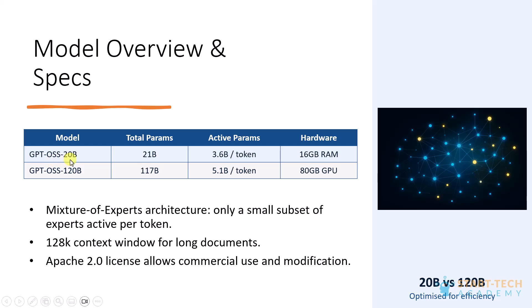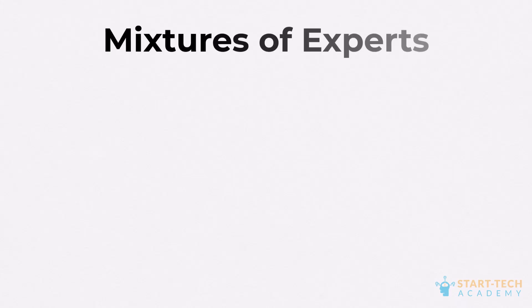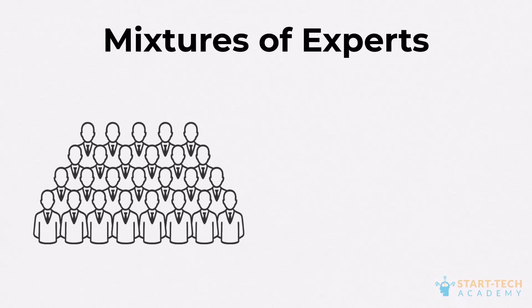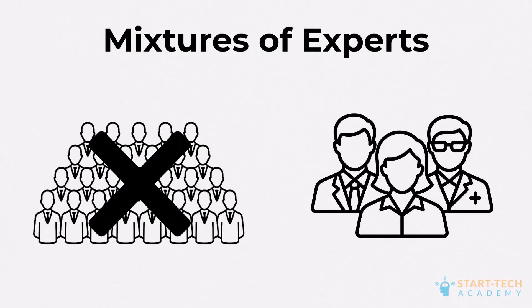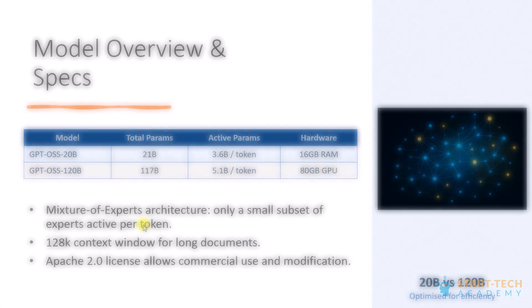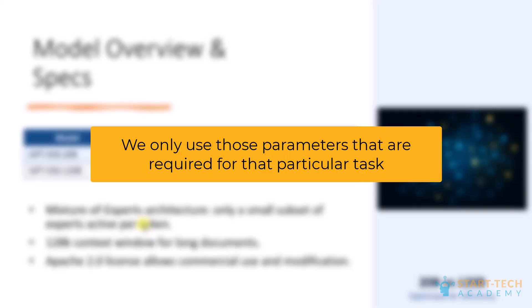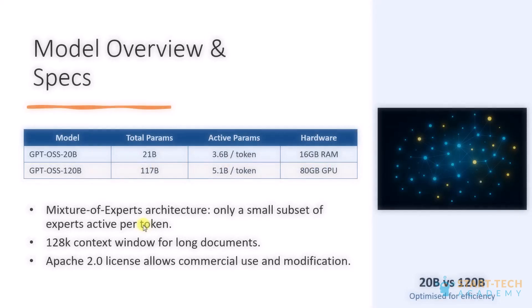Both models use a mixture of experts (MoE) architecture, meaning only a subset of parameters activate per input, making them lighter to run without sacrificing performance. As an analogy: it's like having a team of 100 great minds, but you don't need all of them for one particular job — only those who are expert in that specific field. The mixture of experts architecture works the same way: only the parameters required for a given task are activated.